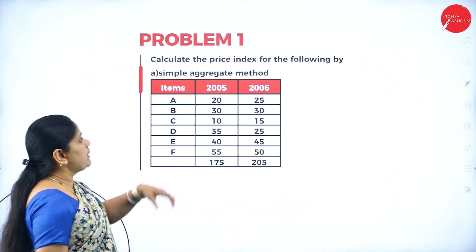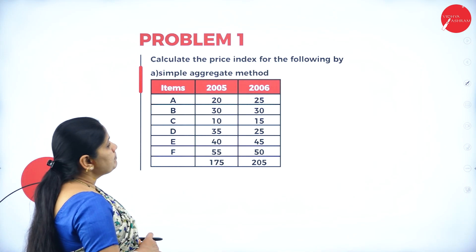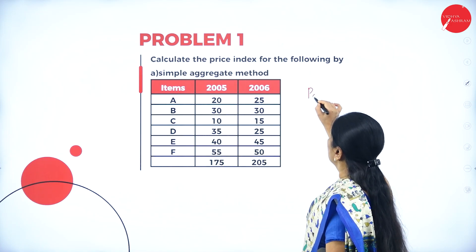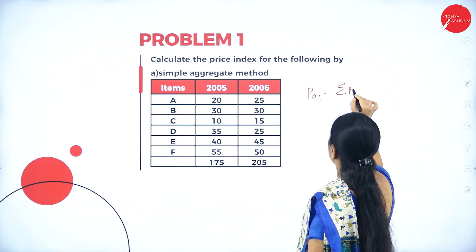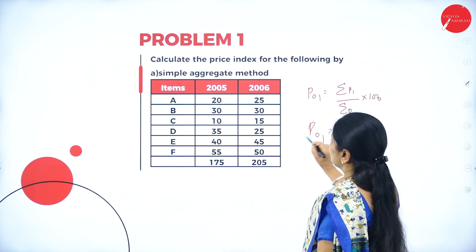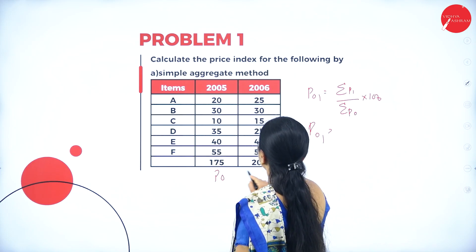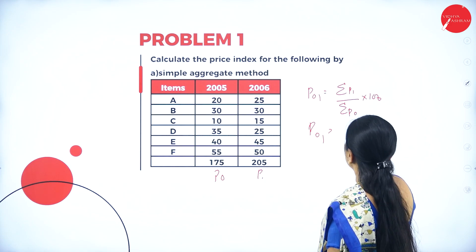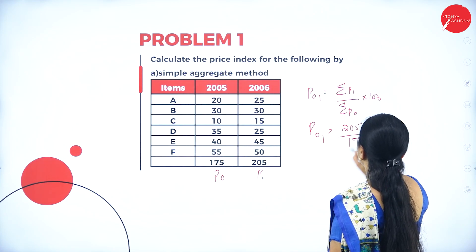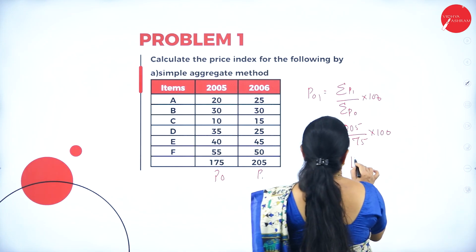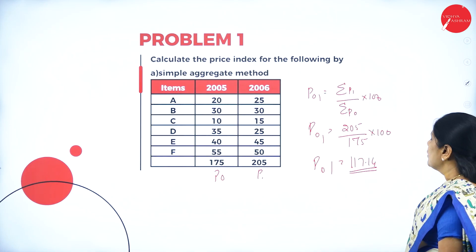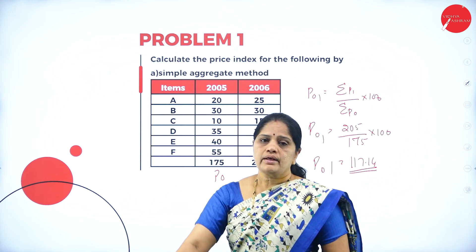The next problem is to calculate the price index by the simple aggregate method. The simple aggregate method formula is P01 = (σP1 / σP0) × 100. When we add all the P1 values we get 205, and the sum of P0 values is 175. So P01 = (205 / 175) × 100 = 117.14.